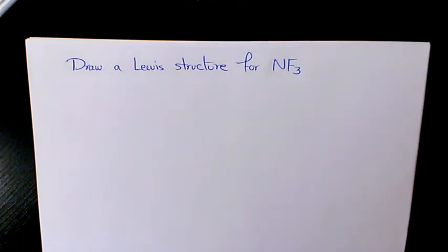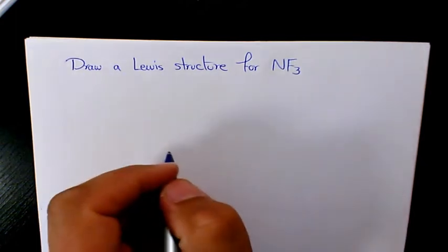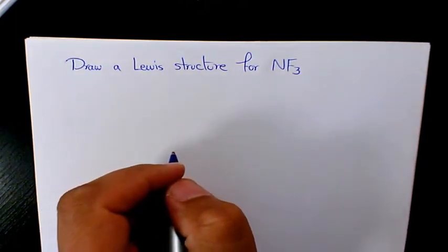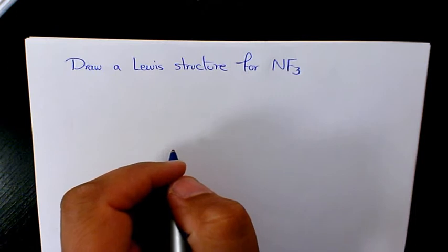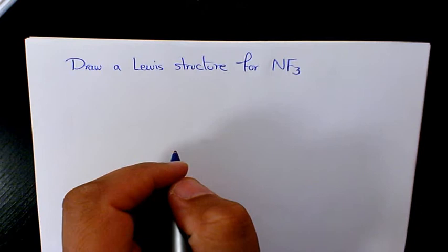What's up guys, this is Massey, welcome to another video. In this video I want to show you how to draw the Lewis structure for NF₃, nitrogen fluoride. The first thing I need to do is identify the central atom, which is usually the element with the highest bonding capacity. Let's find out the bonding capacity of both nitrogen and fluorine.